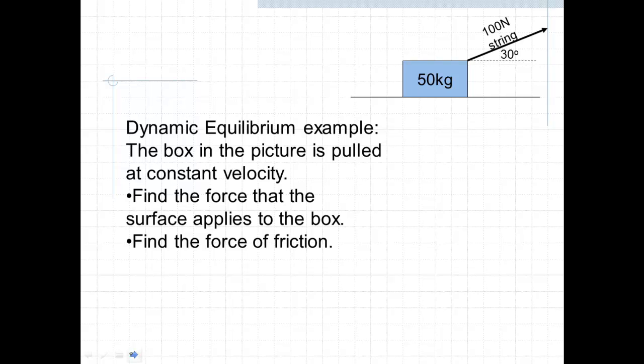So let's look at this problem. This is a dynamic equilibrium example. The box in the picture is pulled at constant velocity. We want to find the force that the surface applies to the box and the force of friction.